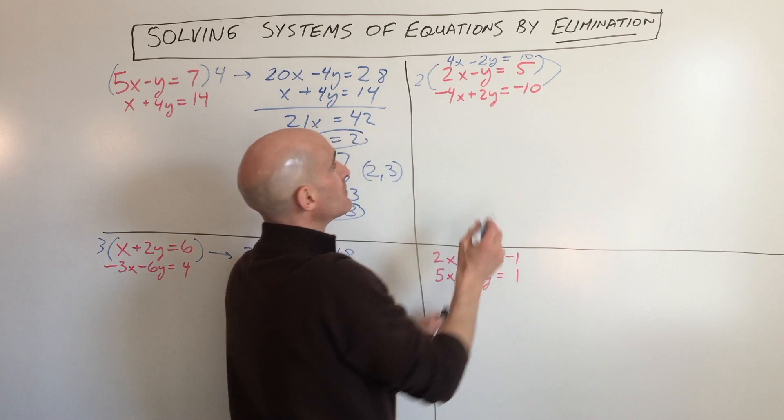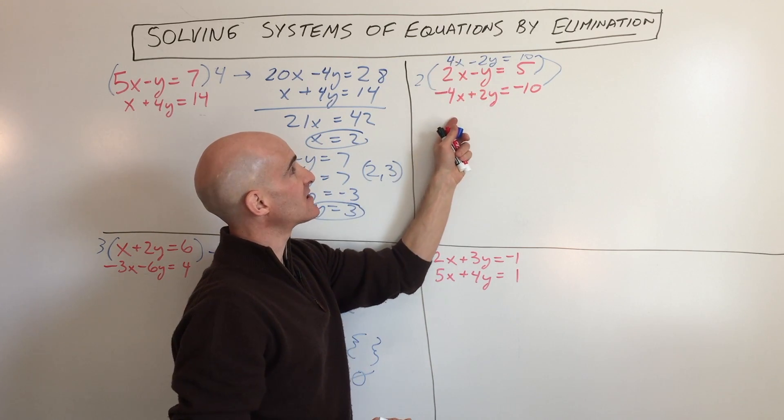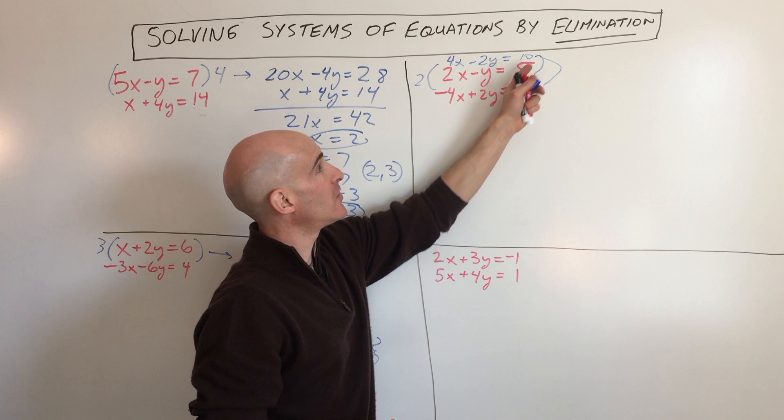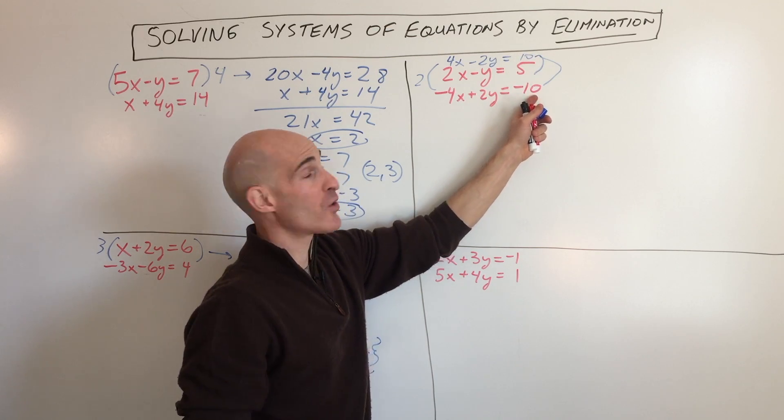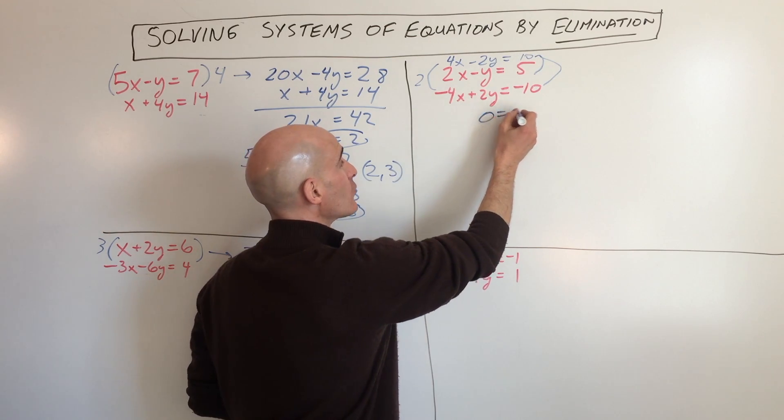So if we combine the top equation with the bottom equation, you can see the x's cancel, the y's cancel, and even these numbers on the right side of the equation cancel. So we're getting 0 equals 0.